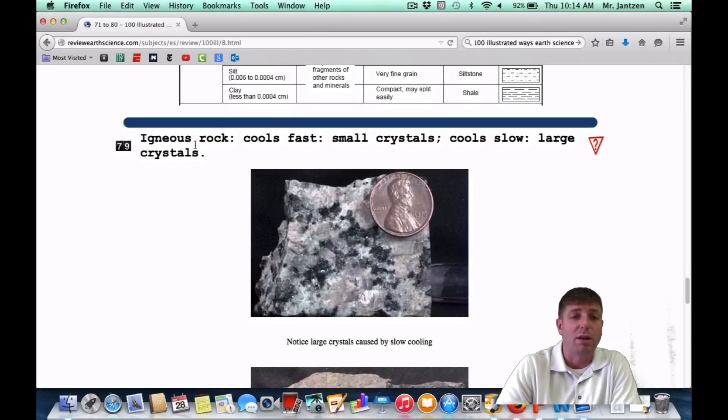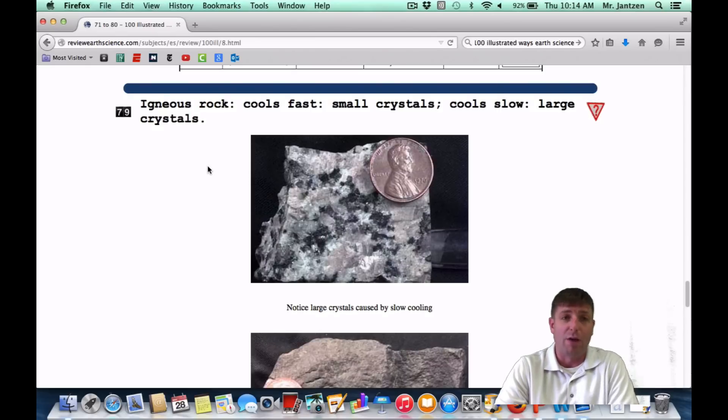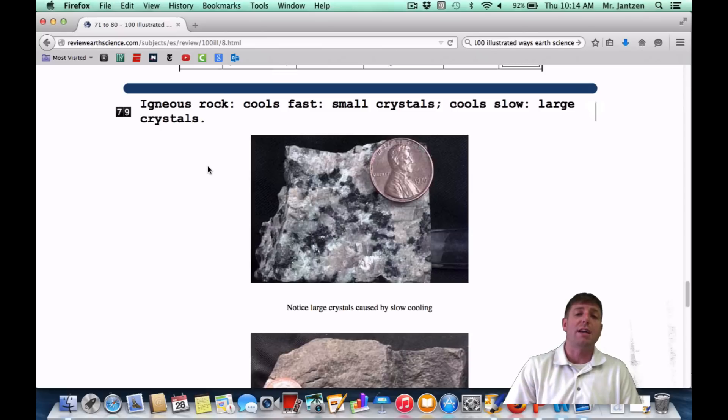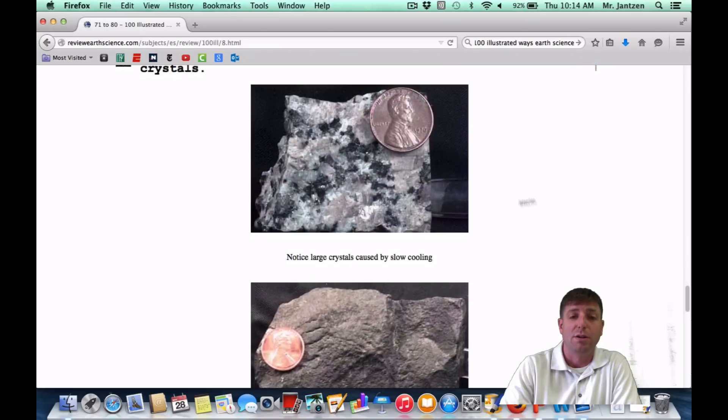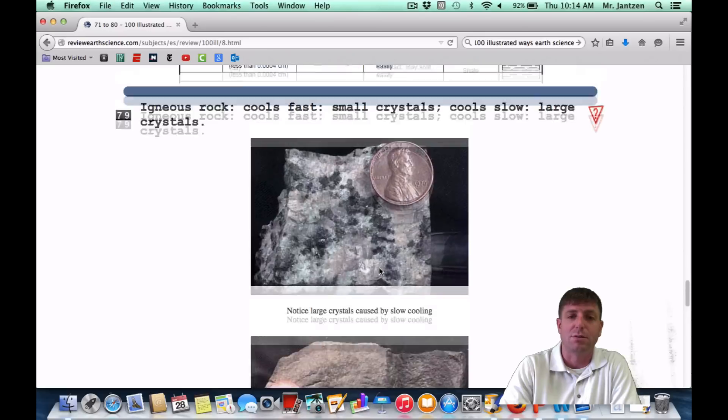Number 79, igneous rock. They cool fast, small crystals. Cool slow, large crystals. How igneous rocks form, you can use a rock cycle chart again. But if it cools fast, that means it cools very quickly, so the crystals don't really have time to form. If they're cooling slowly, they're big crystals, and they have plenty of time to form. So deep within the crust, you're going to have larger crystals. Near the surface, you're going to have smaller crystals. So here's larger crystals by slow cooling and smaller crystals by fast cooling.